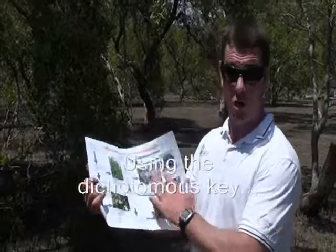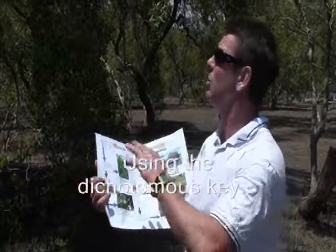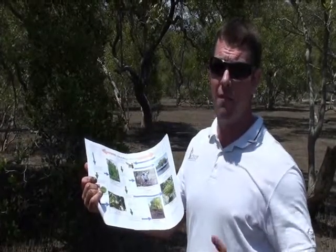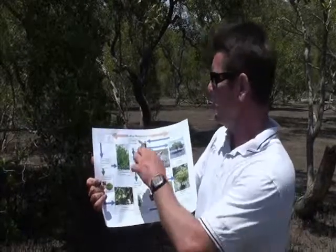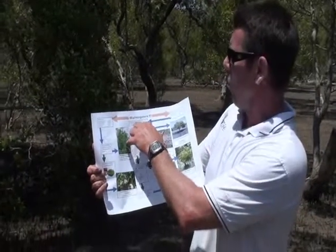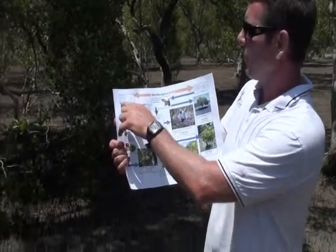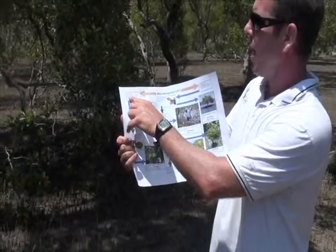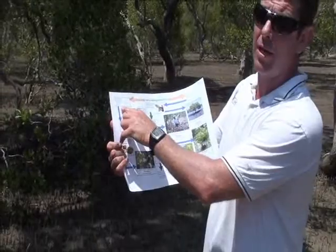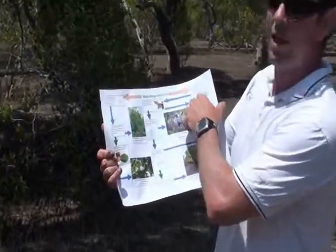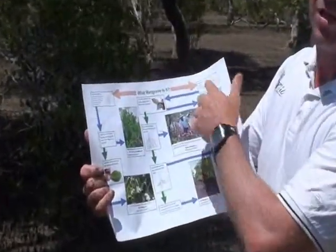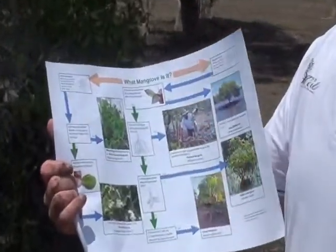If we're going to use our dichotomous key to identify what particular type of mangrove this is, our very first question on the key says: what mangrove is it? Do they have alternate leaves or are the leaves opposite? So let's go and have a look and find out.